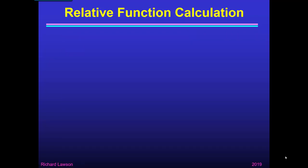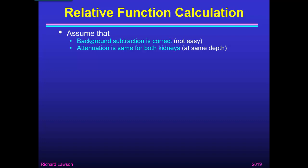So bearing that in mind, let's see how we can calculate a relative function. We need to make some assumptions. First, let's assume that background subtraction has been done correctly — that's not easy to get right, but let's assume that we have done it properly. Secondly, we have to assume that attenuation is the same for both kidneys, meaning that both kidneys lie at the same depth in the patient's back. Gamma rays emerging from the kidney will be attenuated by the tissues in the patient's back, so we have to assume that the loss is the same for both kidneys.